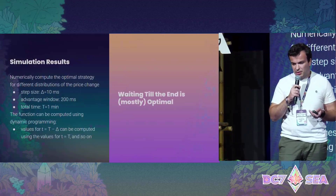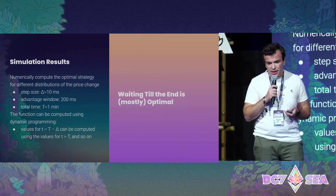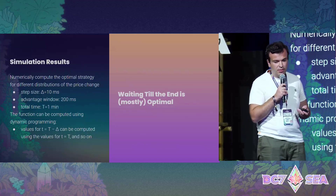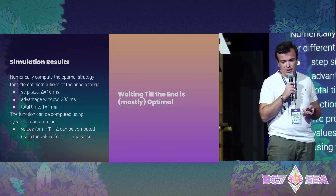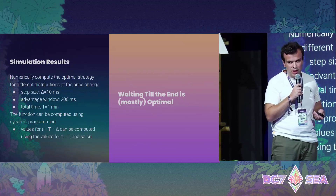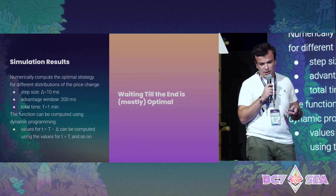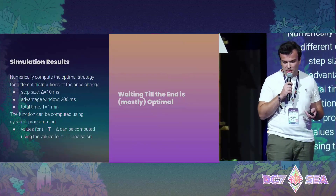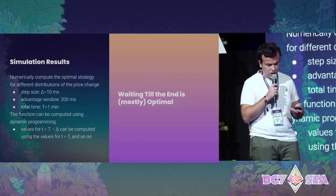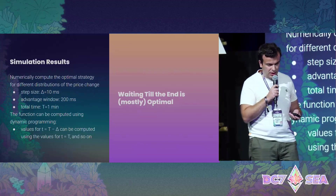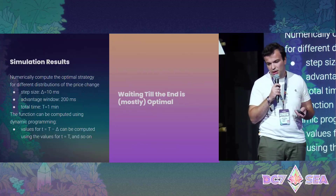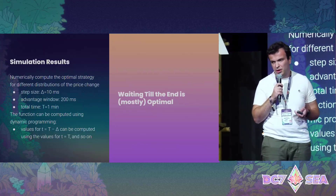The punchline is that dynamic programming solves this problem. We then simulated it on real data: the Ethereum/USDT market on Binance, with a step size of 10 milliseconds, an advantage window of 200 milliseconds, and a total time of one minute. For each internal point we calculate the optimal move and the average arbitrage value. We obtained the observation that waiting until the end of the advantage time is mostly optimal, but not always — there are some cases when it's not optimal.